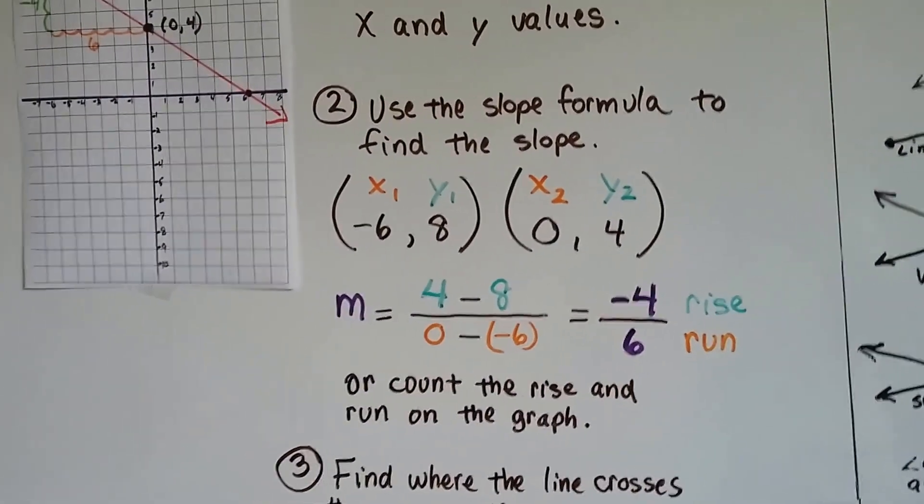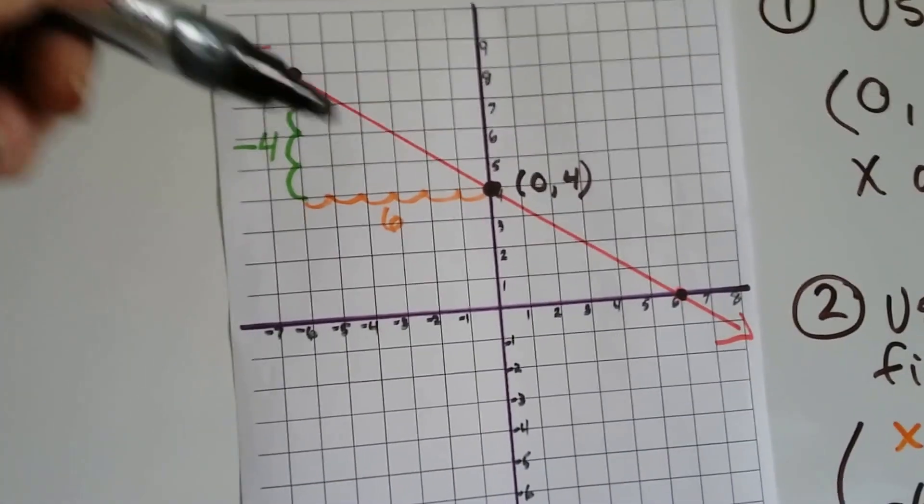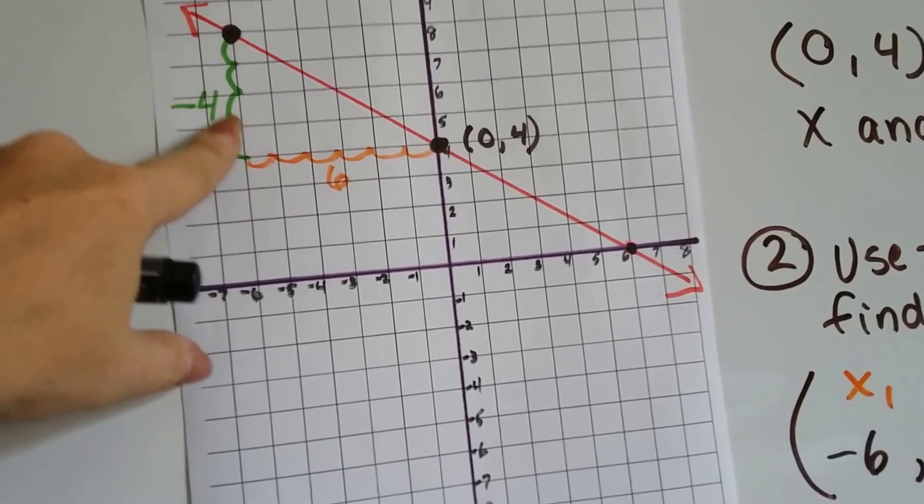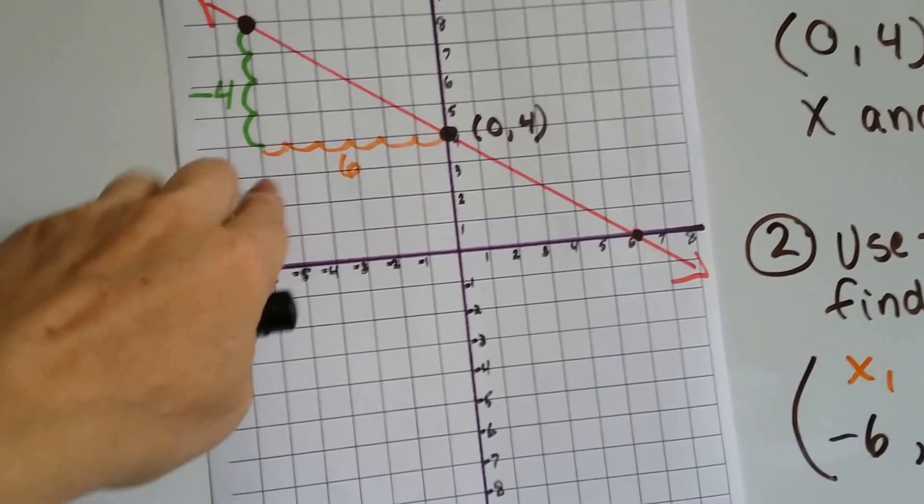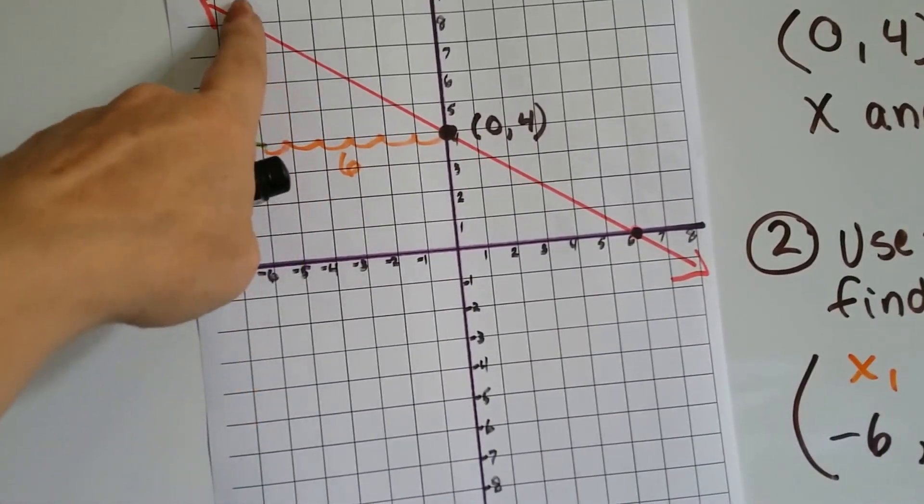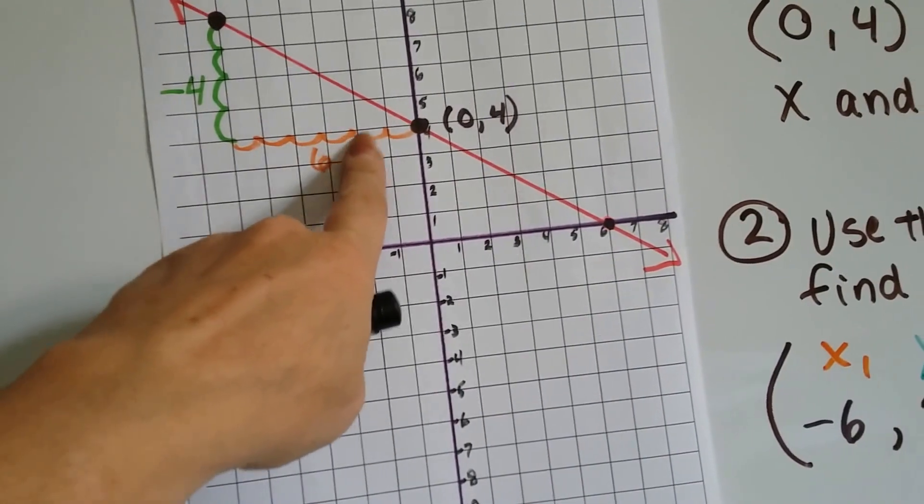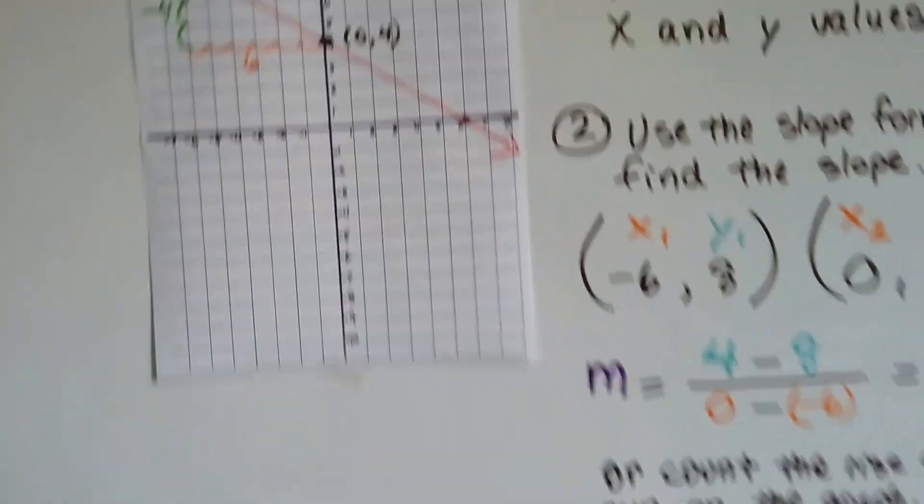We could also count the rise and run on the graph. Because it's falling to the right, we count down 1, 2, 3, 4 until it's even with this point. And we count our horizontal run from this point down. We count 1, 2, 3, 4, 5, 6. And we've got negative 4 over 6.